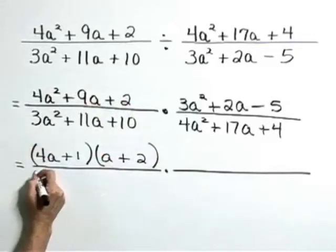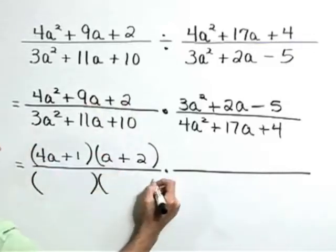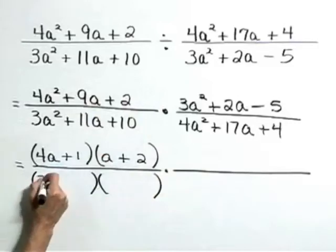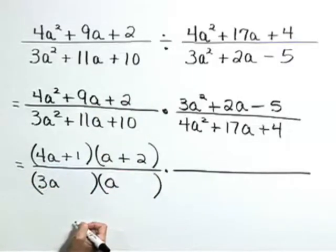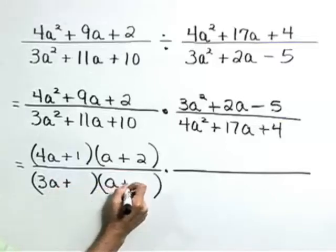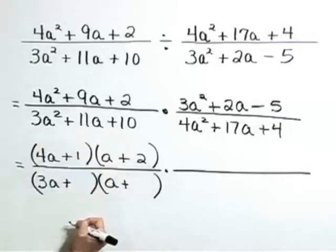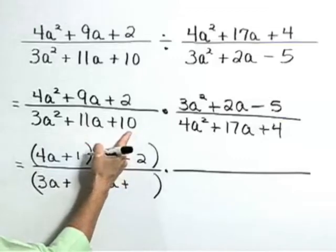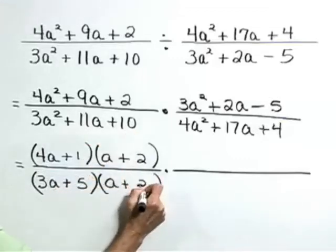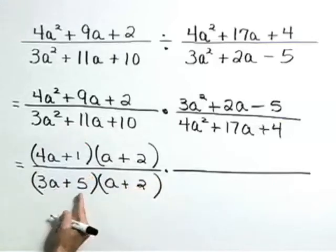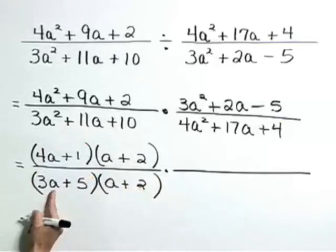Down to the denominator. Factoring as two binomials with leading terms of 3a and a. We know these are both going to be plus signs because we've got plus signs throughout the trinomial. Now factors of 10 that are going to work in here are a positive 5 and a positive 2. Checking 5a plus 6a gives that middle term 11a.